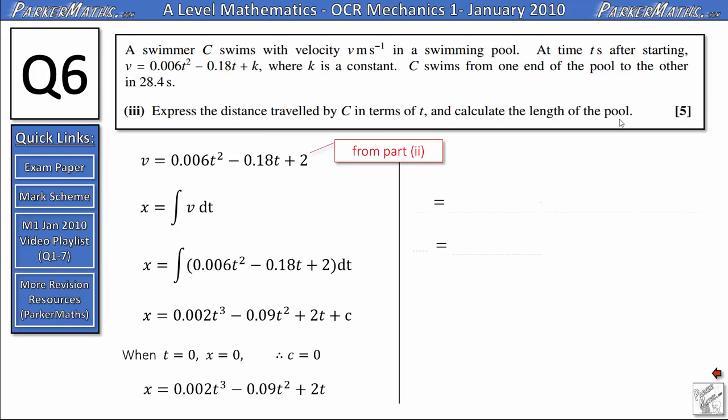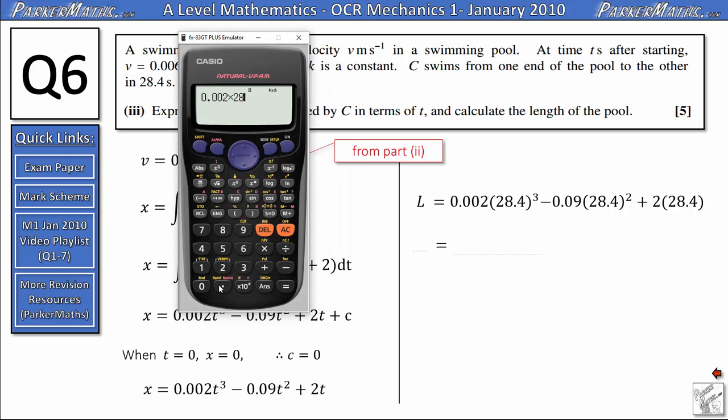Using this we can then calculate the length of the pool. In the question it tells us that the swimmer can swim from one end to the other in 28.4 seconds, so that's going to become our value of t. So we'll call the length of the swimming pool l and that's going to be given by 0.002 multiplied by 28.4 cubed minus 0.09 times 28.4 squared plus 2 lots of 28.4, and that gives us 30.0 if we round to three significant figures.